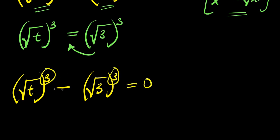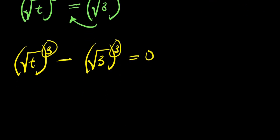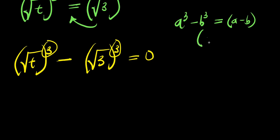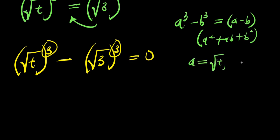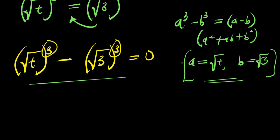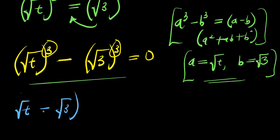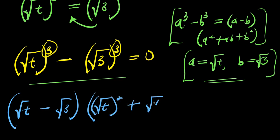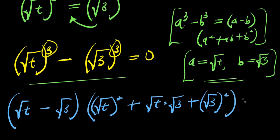There is a power of 3 here and a power of 3 here with a minus sign, so we need to expand this using the difference of cubes identity. If you have a cubed minus b cubed, this equals a minus b, times a squared plus ab plus b squared. In this case, a equals root t and b equals root 3. Applying this identity, we have root t minus root 3, times root t squared plus root t times root 3 plus root 3 squared, equals 0.